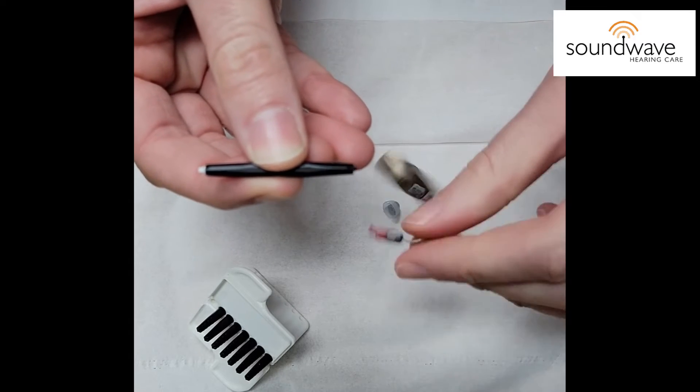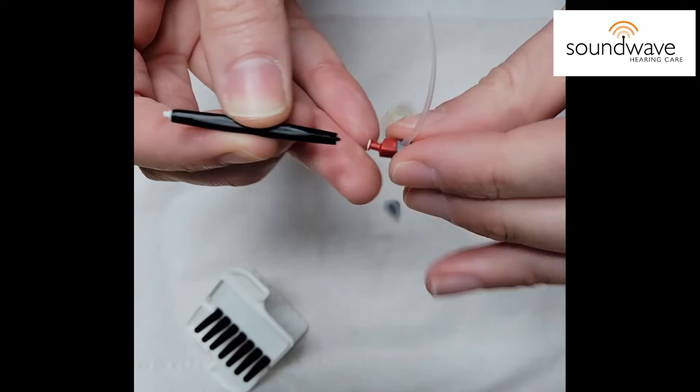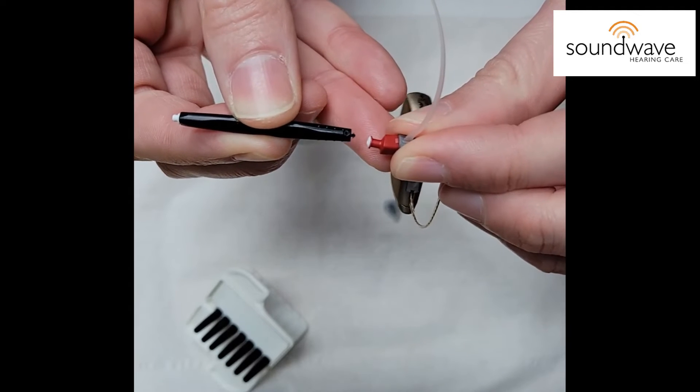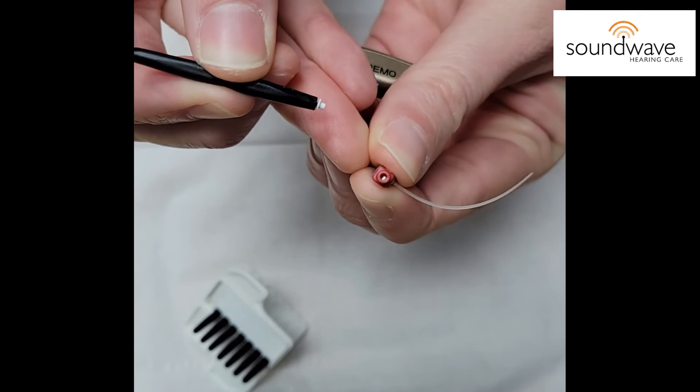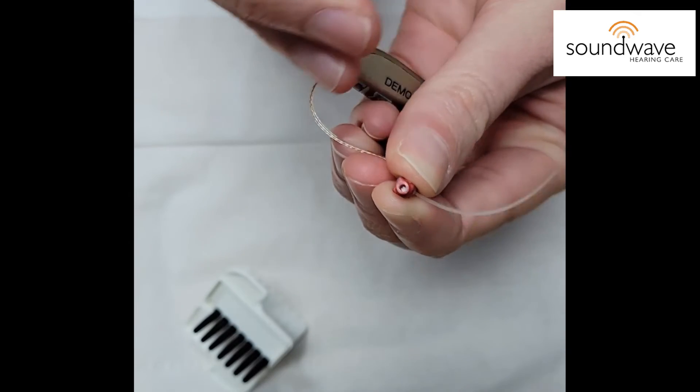What you need to do is you're going to hold the hearing aid firmly and with the sharp end you're gently going to push in and pull out. As you may notice the filter has been removed from the hearing aid.